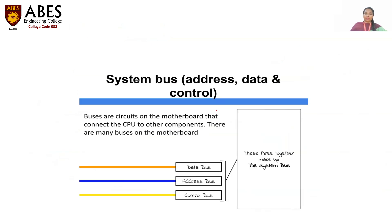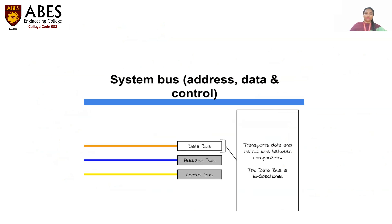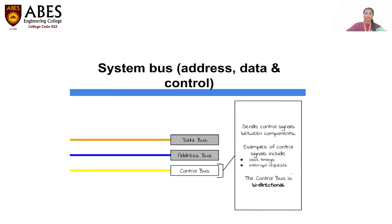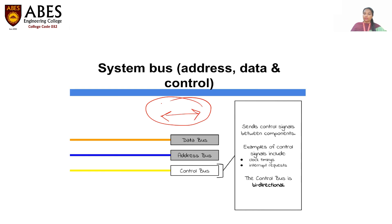This is a brief introduction about these three lines. Combined, it is known as the system bus. Data bus is used to transport the data and instructions between the components, and that is why it is bidirectional. Address bus sends the address signals from the CPU to the main memory, and these address signals contain specific address locations from the main memory — that is why they are unidirectional. The control bus sends control signals between the components so that they can check their timings and whether they are synchronized. The control bus is bidirectional because it can operate in both directions.